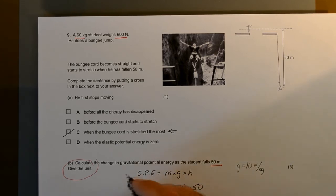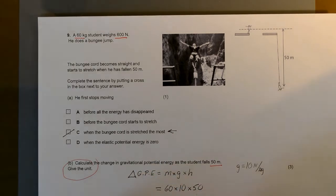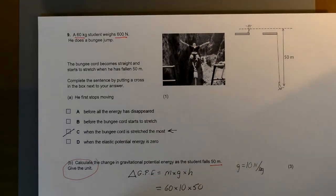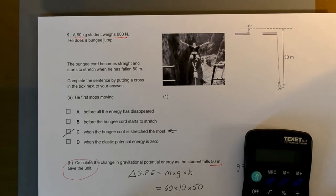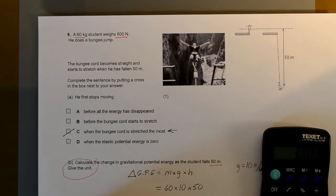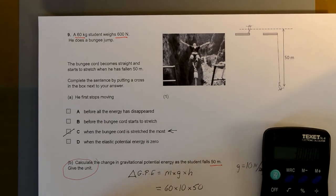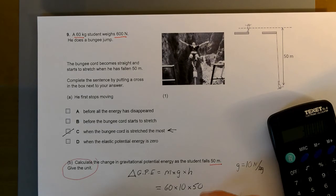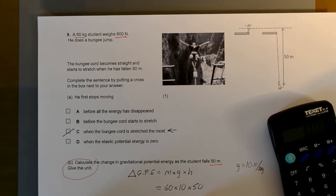So the change in gravitational potential energy, delta means change, is 60 times 10 times 50, which equals 30,000. The units of energy are joules. So 30,000 joules. You could call that 30 kilojoules.